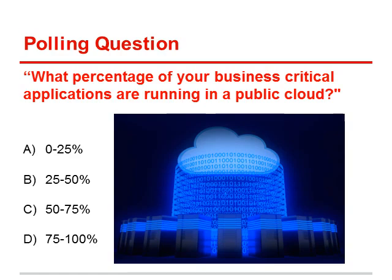Let's start with a polling question. What percentage of your business-critical applications are running in the public cloud right now? A: 0% to 25%, B: 25% to 50%, C: 50% to 75%, D: 75% to 100%.